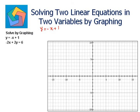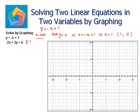For the x-intercept, put y as 0: 0 is equal to negative x plus 1. Adding x to both sides, I get x as 1, so (1, 0) becomes the x-intercept. For the y-intercept, put x as 0: y is equal to negative 0 plus 1, which is y equals 1, so (0, 1) becomes the y-intercept. Joining these two points together, I can form a line.